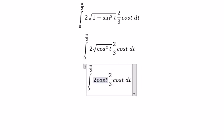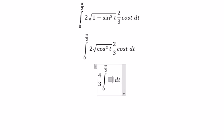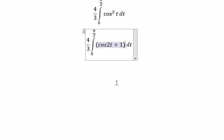2 and 2 over 3 gives you 4 over 3. And for cosine t squared, you got cosine 2t plus 1 over 2.